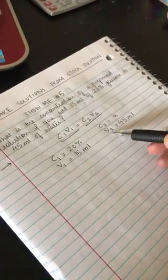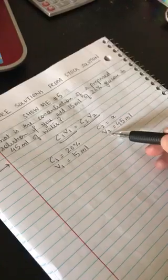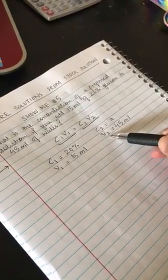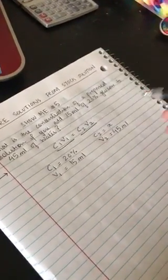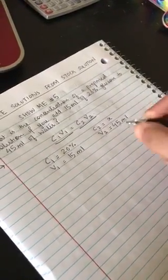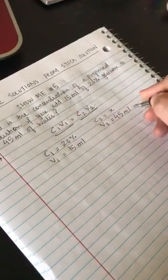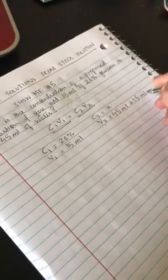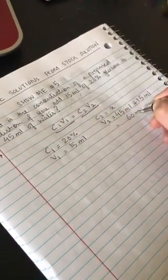However, your V2, or the volume of the diluted solution, is the total of what you add and what is already there.